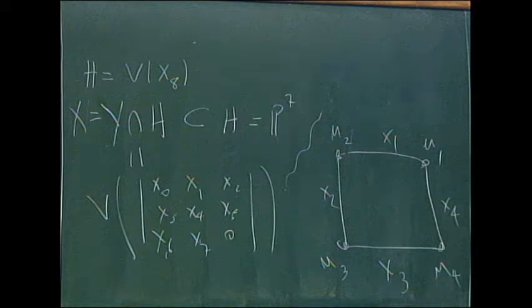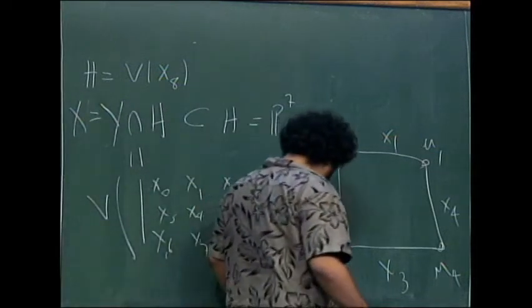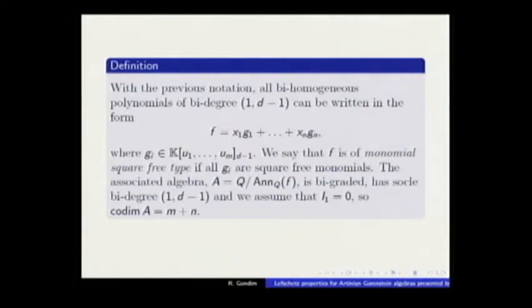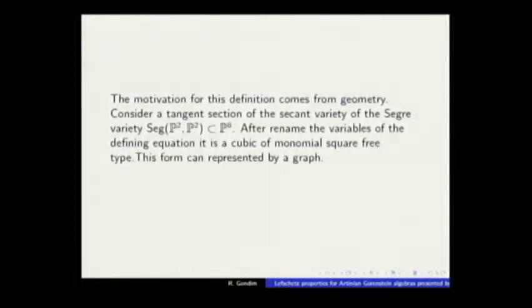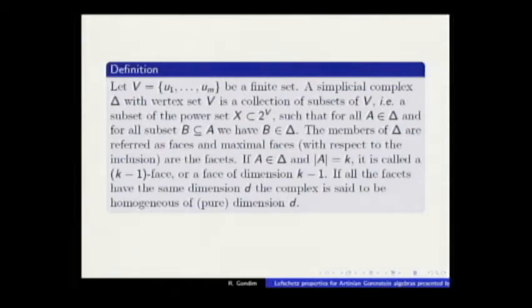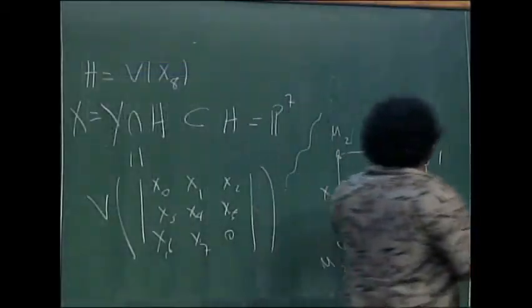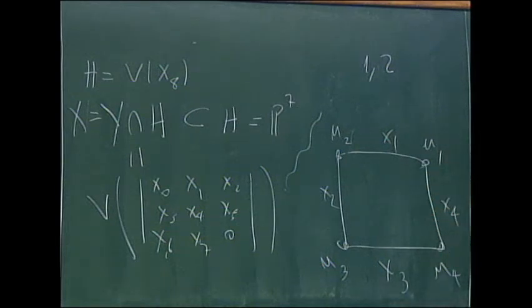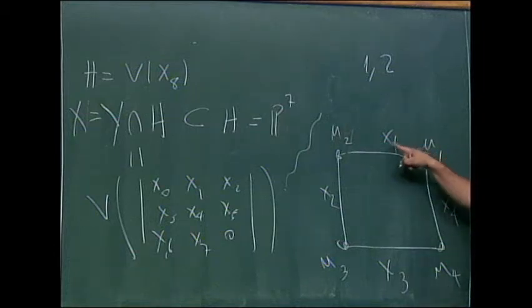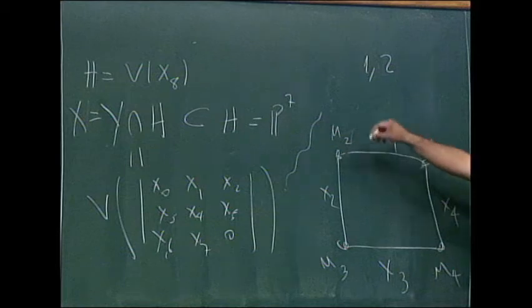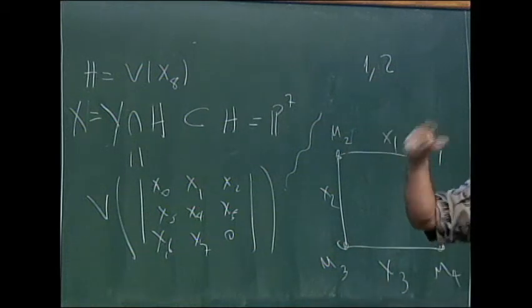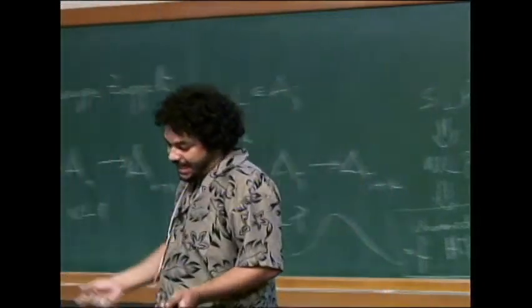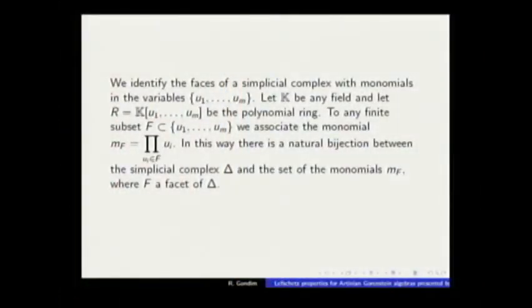Now we can generalize this example. This example is a counterexample for the conjecture, but we want to generalize this example. Not always will it be a graph. In general, in bi-degree (1,2), we got a graph. But in general, we get a simplicial complex in the same way. The name of a facet is given by all the variables that appear in the monomial g_j together with x_i. That's what I'm going to explain.